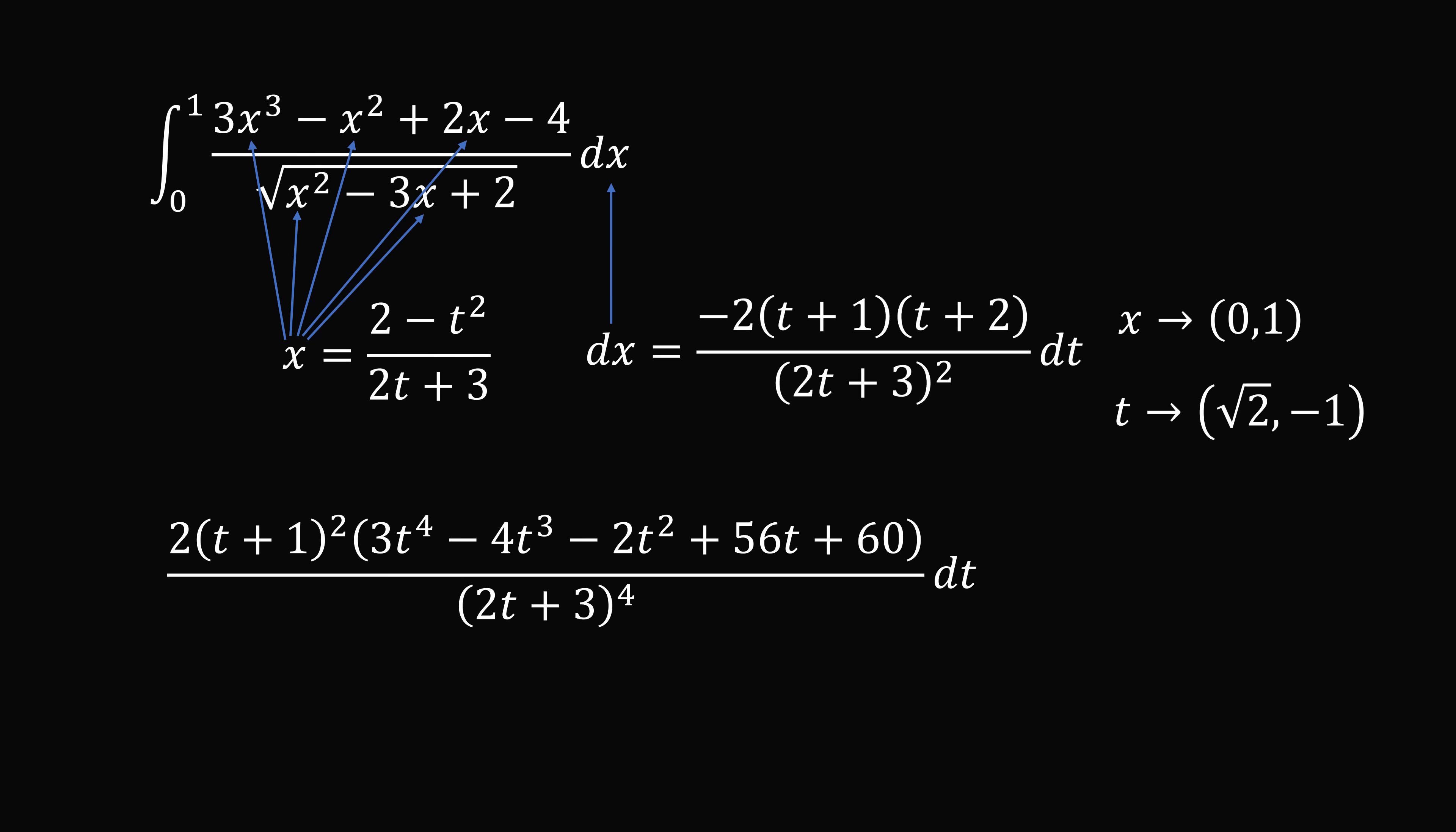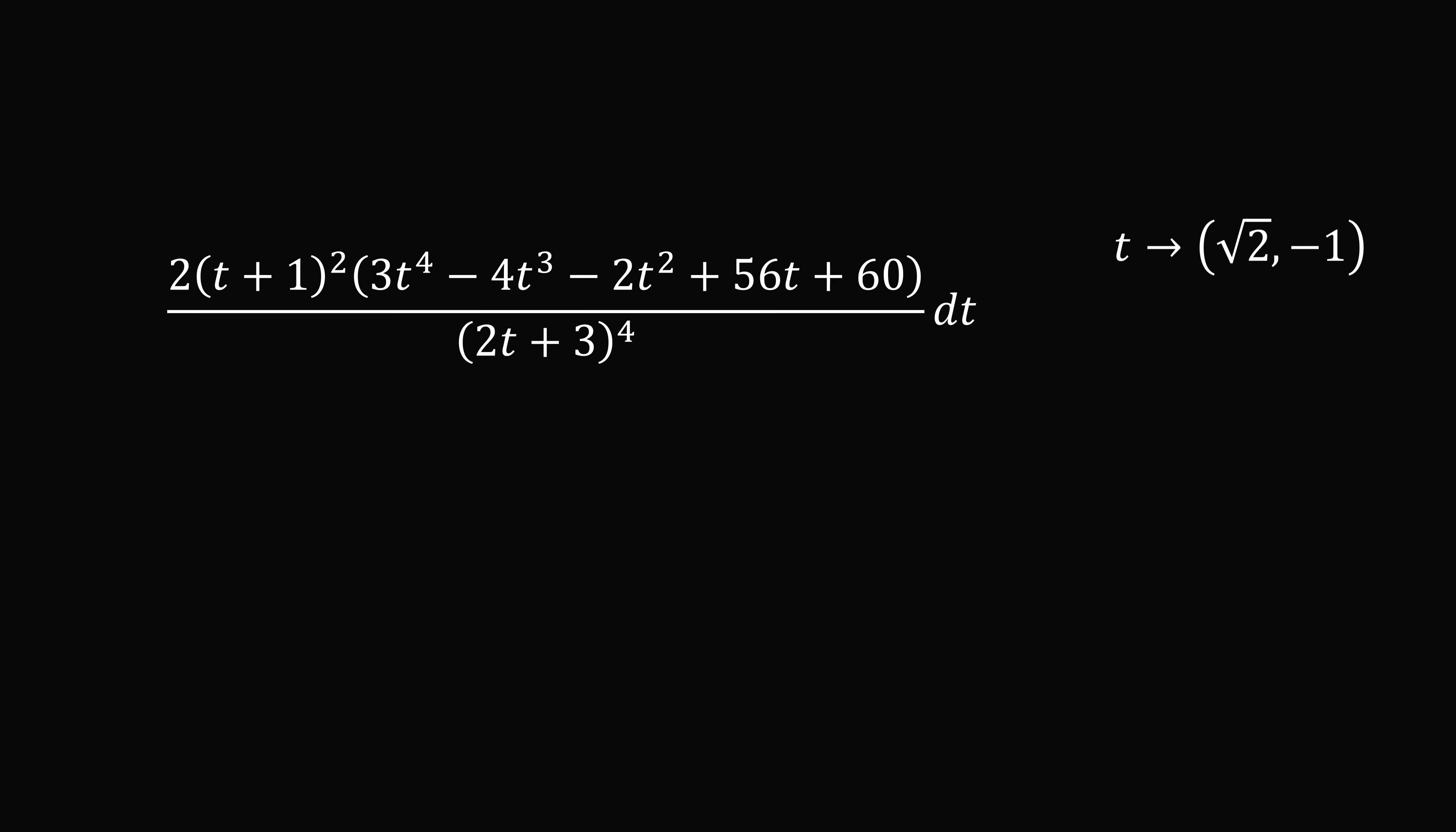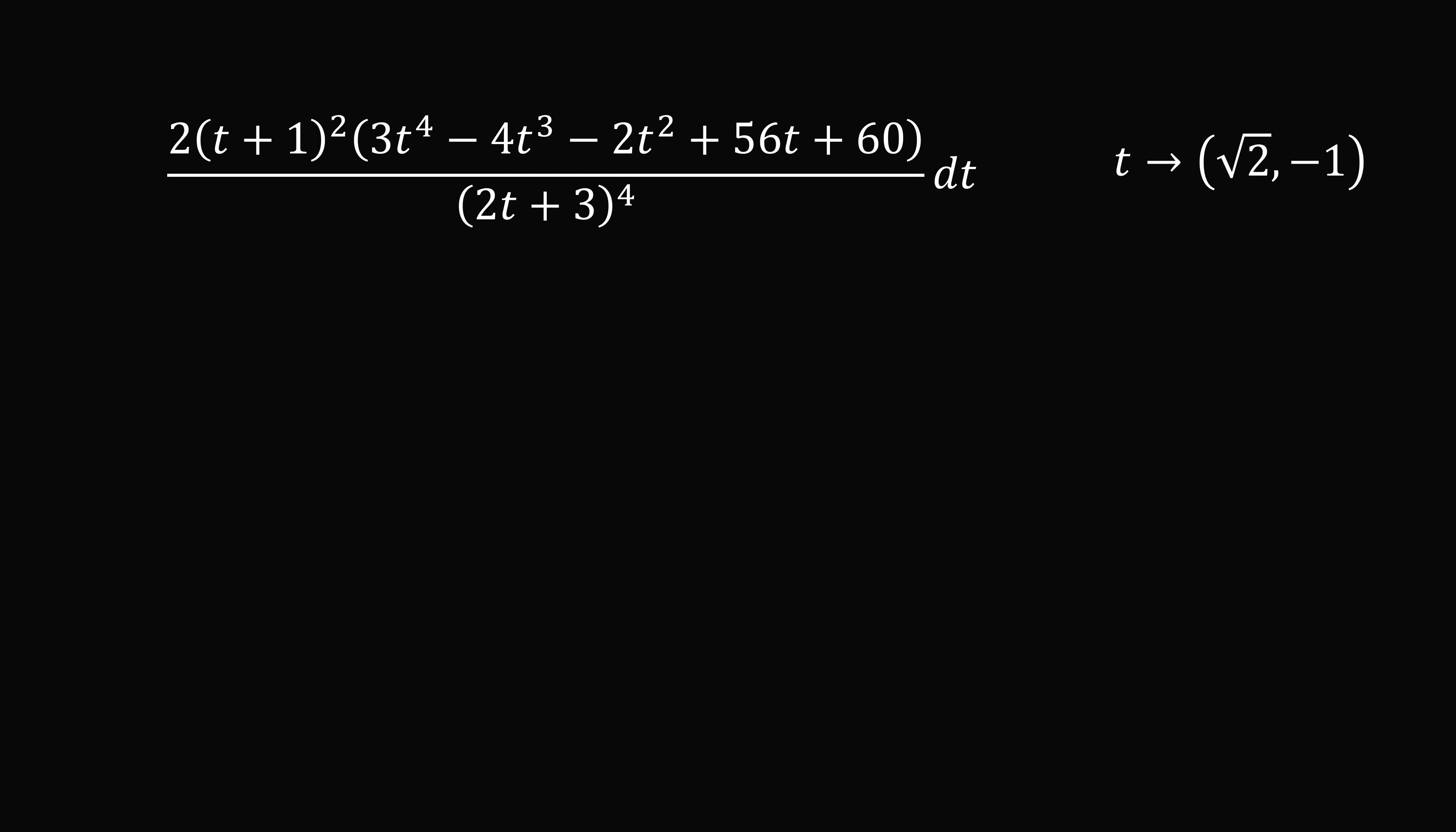So this is going to help us, even though it looks like the problem is still very difficult. So now what do we do? Well, we can take 2t plus 3 in the denominator and set that equal to u. This will simplify things a little more.